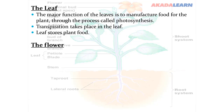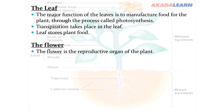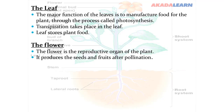The function of the flower: the flower is a reproductive organ of the plant. It produces the seeds and fruits after pollination.